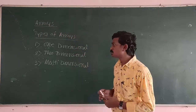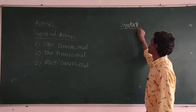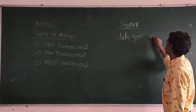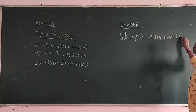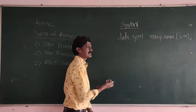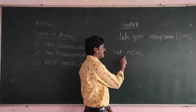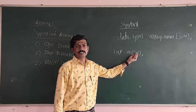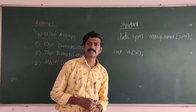Now, how to define an Array? To define an Array, we are having a syntax: data type, Array name, and in square brackets, the size. For example, integer A of 10. A is an Array type data structure which is able to store 10 different elements. That is how we are going to be declaring an Array data structure. It is a simple collection of homogenous data elements.